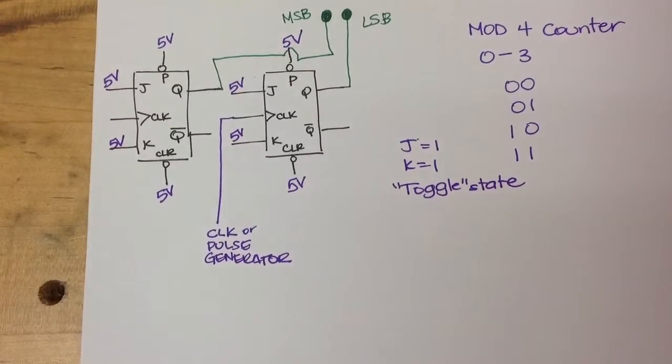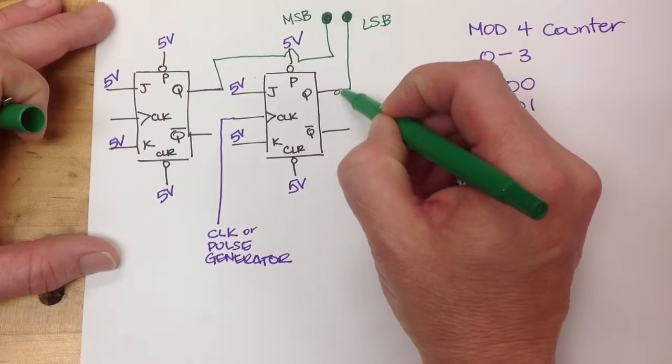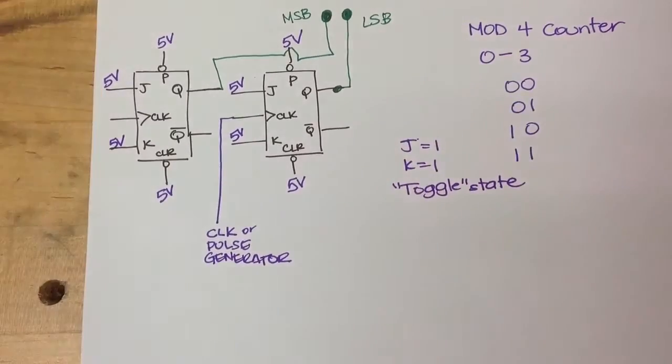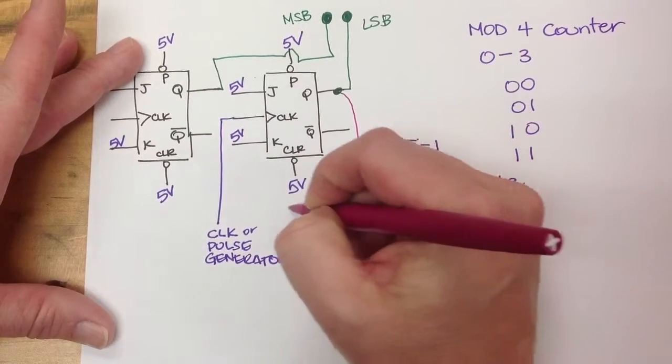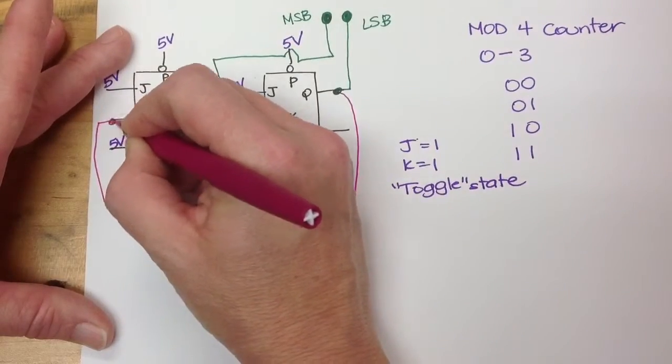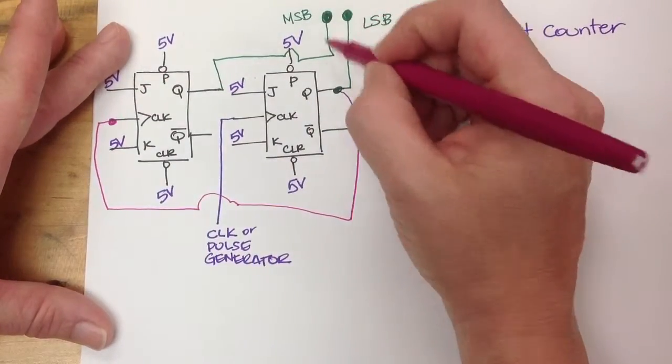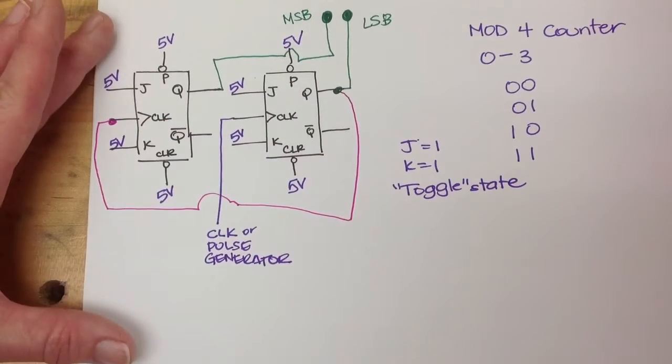Now, the other thing is we want the Q output from this one to also feed the input of our clock for the next JK flip-flop. So it's going to go around here. I'm just going to jump over that. So Q goes to an LED, and it also feeds the clock to trigger our next one.